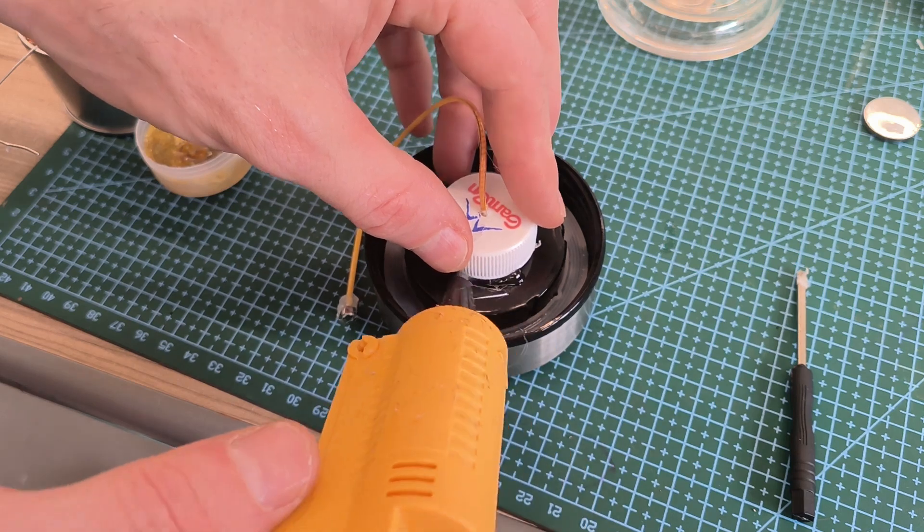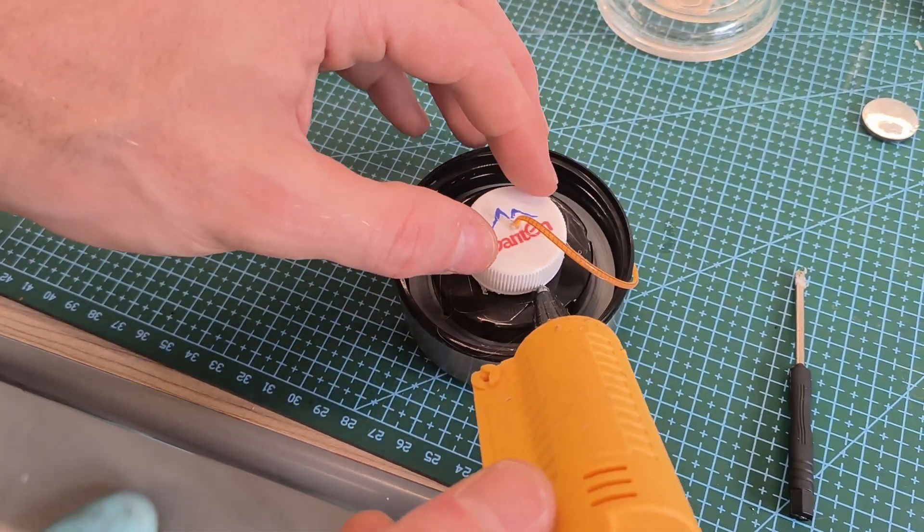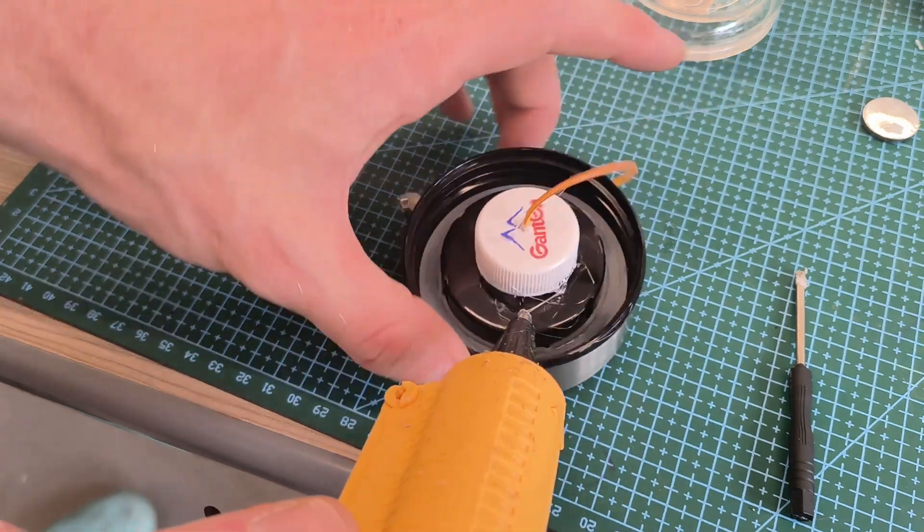Now we can just glue the LED cap onto the bottom of the lid so that we can screw everything together to the inside of our light switch.